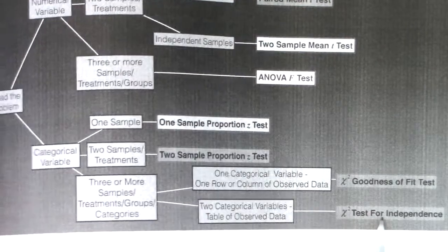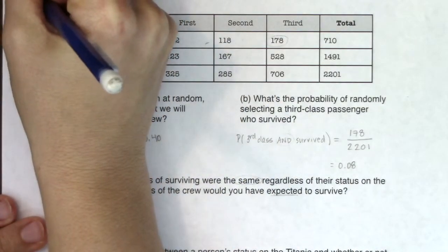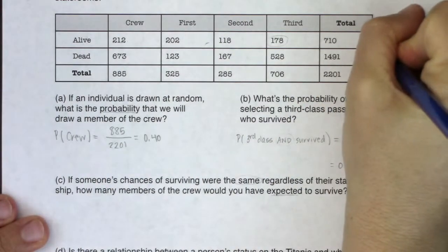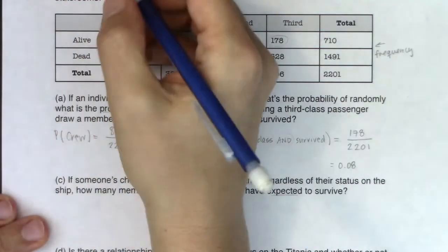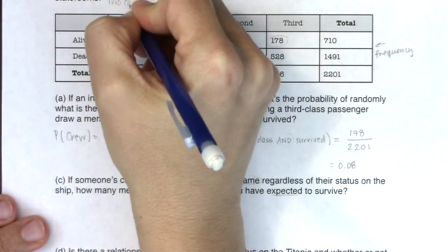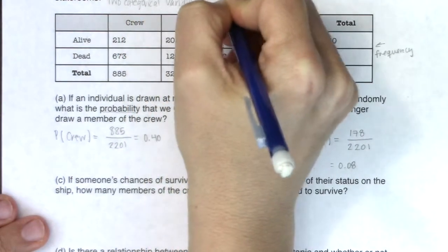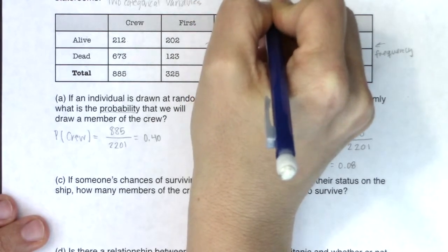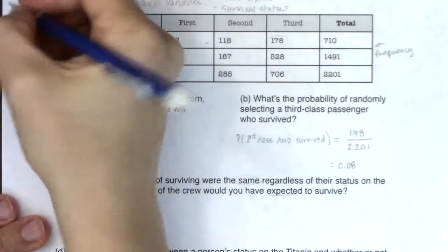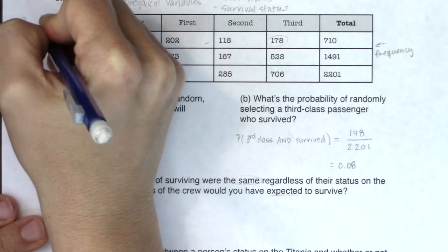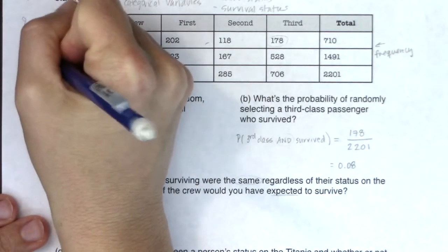I need to decide: did I have one row or one column of observed data, or did I have a table? We clearly have a table, so I'm going to run the chi-squared test for independence. I have frequencies, and anytime I see frequencies I'll turn them into relative frequencies and proportions. I have two categorical variables — class status and survival status — and eight categories total: eight cells in the table if we ignore the totals.